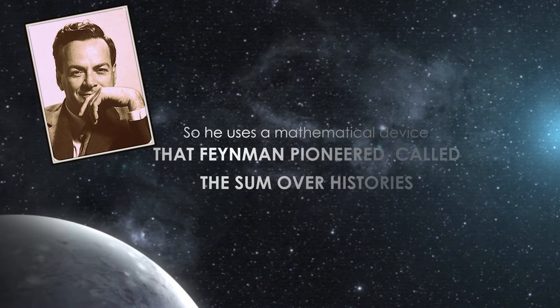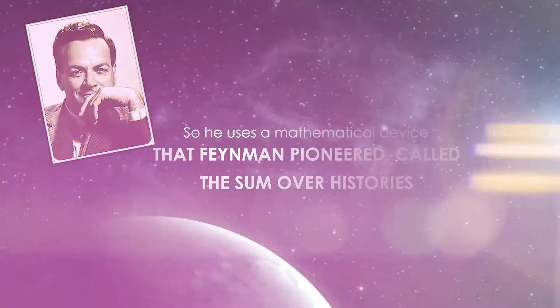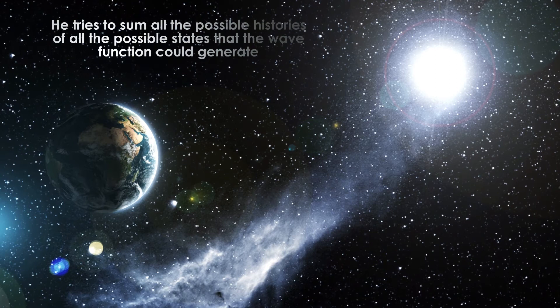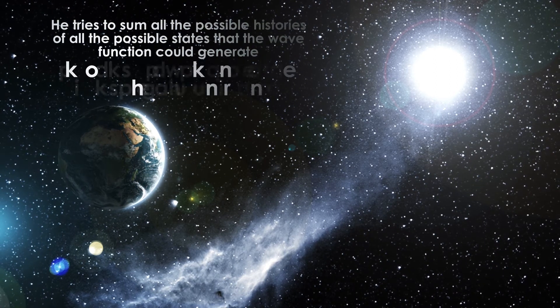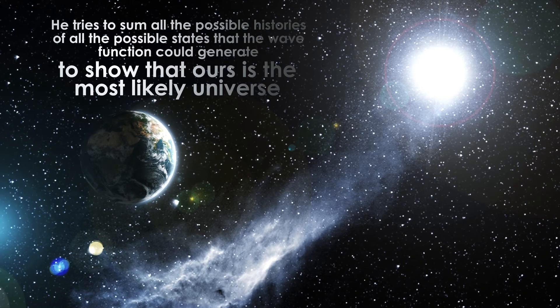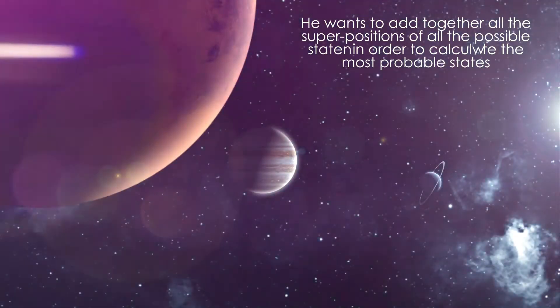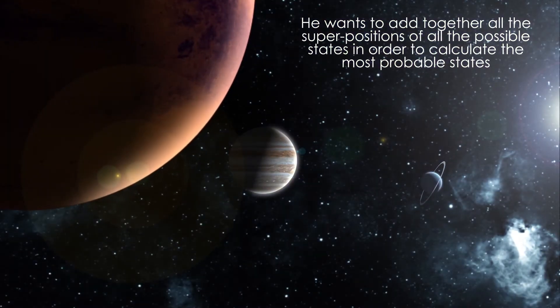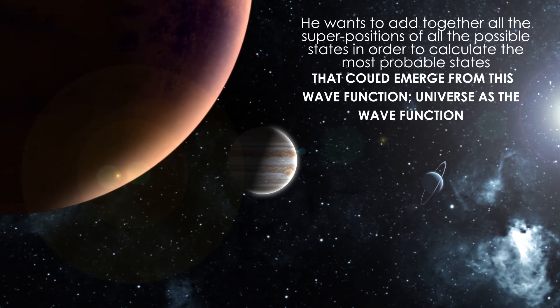So he uses a mathematical device that Simon Pioneer called the sum over histories. He tries to sum all the possible histories of all the possible states that the wave function could generate to show that ours is the most likely universe. In other words, he wants to add together all the superpositions of all the possible states in order to calculate the most probable states that could emerge from this wave function.